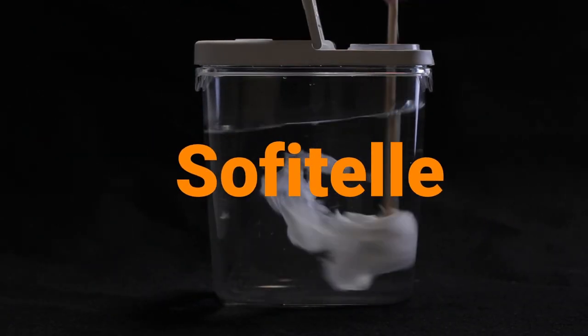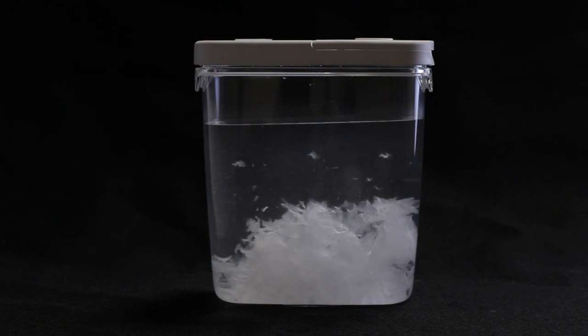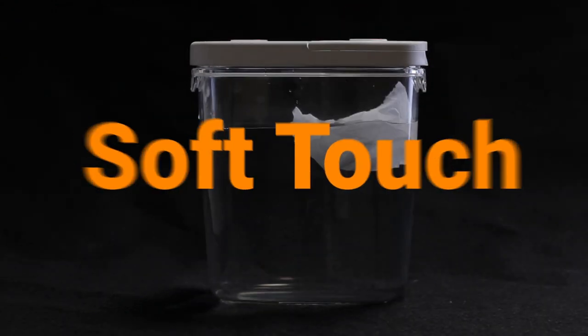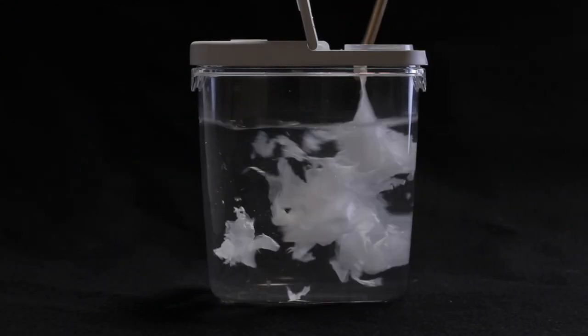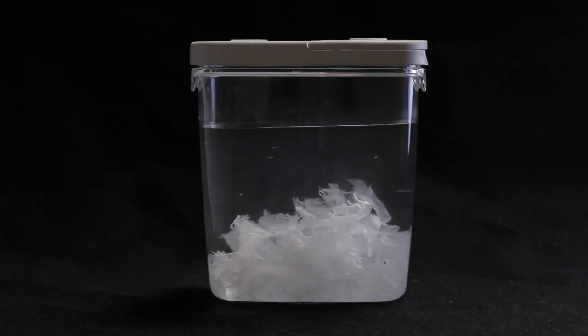Sofitel was a slightly softer toilet paper tissue than Scott, broke apart well, and was cheaper than Scott. Soft Touch did not have a soft touch. It was cheap and disintegrated well and it also looked identical to Sofitel.